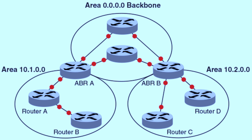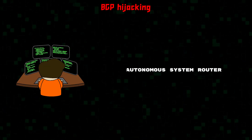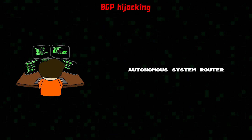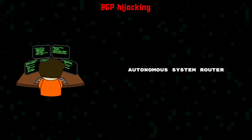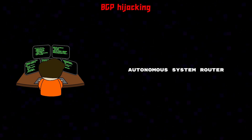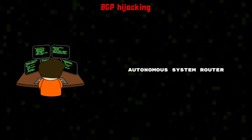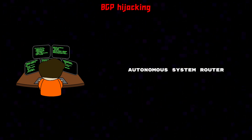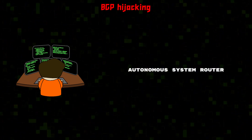Since BGP always favors the shortest path to the desired IP address, anyone looking to cause a BGP hijack must create a route announcement that either provides a more specific route with a smaller range of IP addresses than other ASes, or offers a shorter route to certain blocks of IP addresses. Both strategies require the hacker to either control an autonomous system router or compromise one of approximately 80,000 currently operational autonomous systems. This is why most malicious BGP hijacks are the work of highly skilled and well-funded hacker groups.